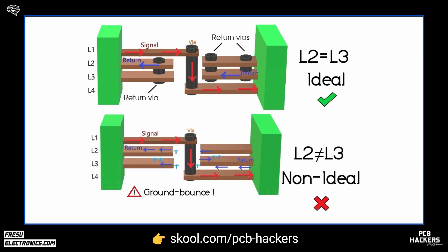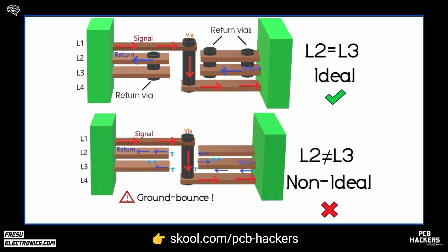What happens when the signal transitions from the top layer to the bottom layer? If we have layer 2 and layer 3 at the same voltage and we use return stitching vias to connect the planes together keeping them equipotential, the return current will utilize the stitching vias to return to the source and there won't be any problems. However, if layer 2 and layer 3 have different voltages, we cannot add stitching vias because the planes have different voltages. In this scenario the signal would have to traverse the impedance between the two planes until it finds its way back to the driving source, which can lead to voltage drops and noise in the circuit.